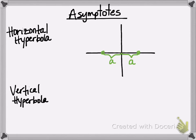So that's not going to change. A is always going to be the distance from center to vertex.